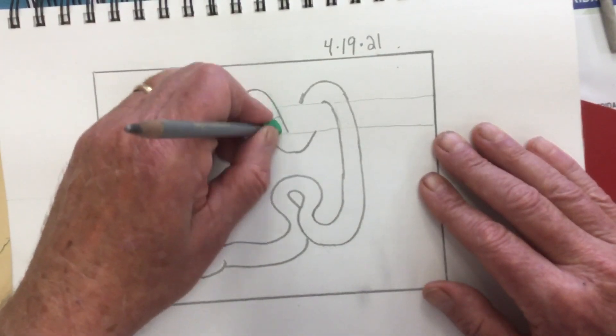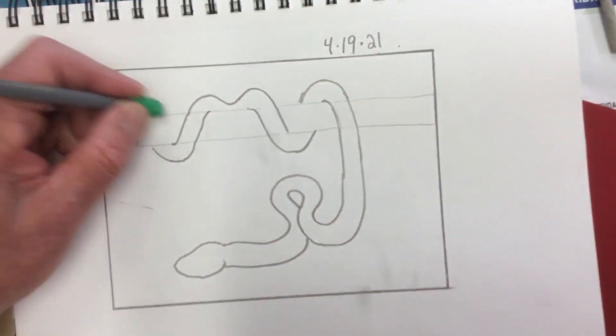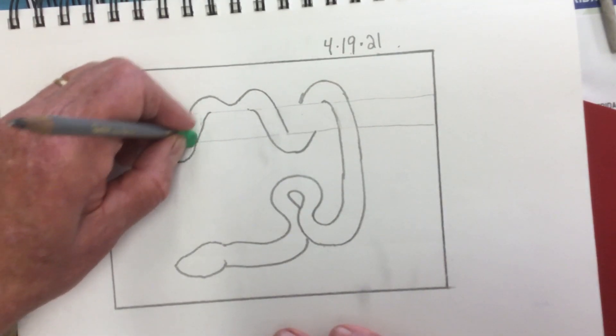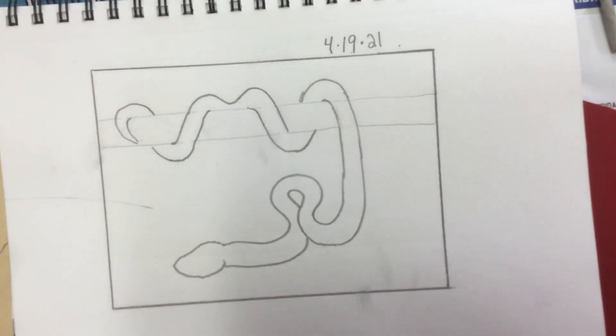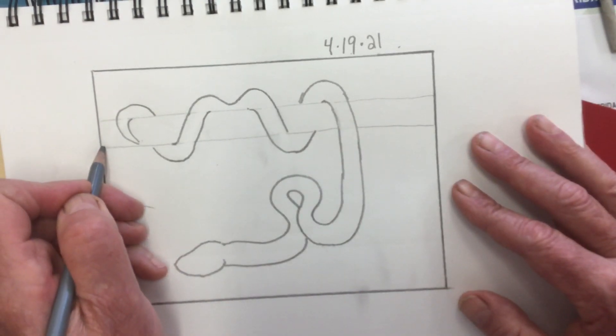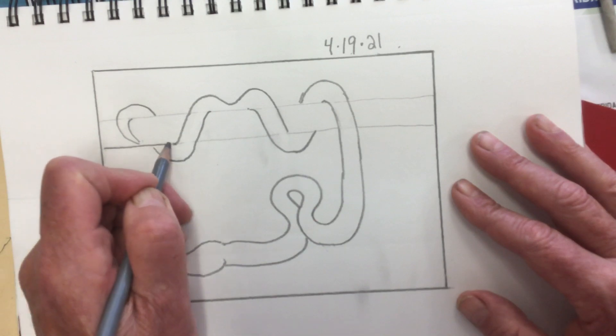We don't need these lines anymore because the snake is in front of them, and we can make these lines a little stronger now.